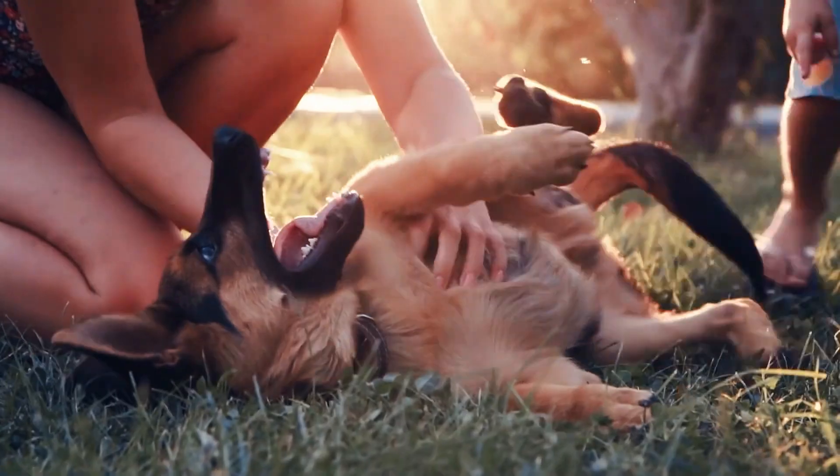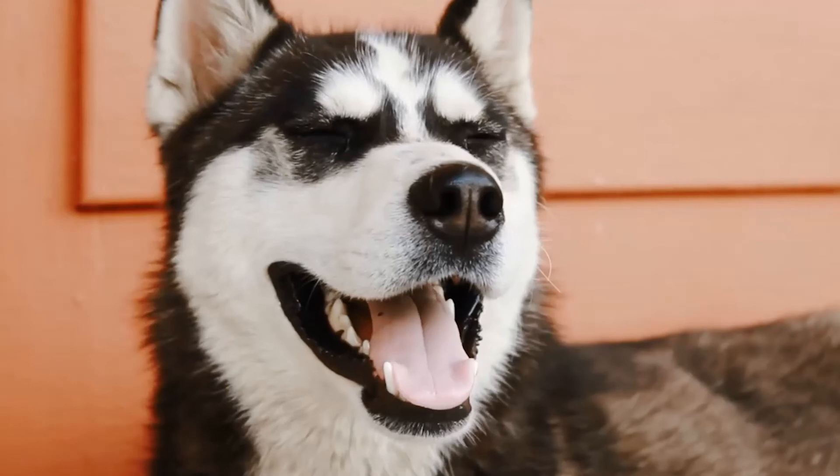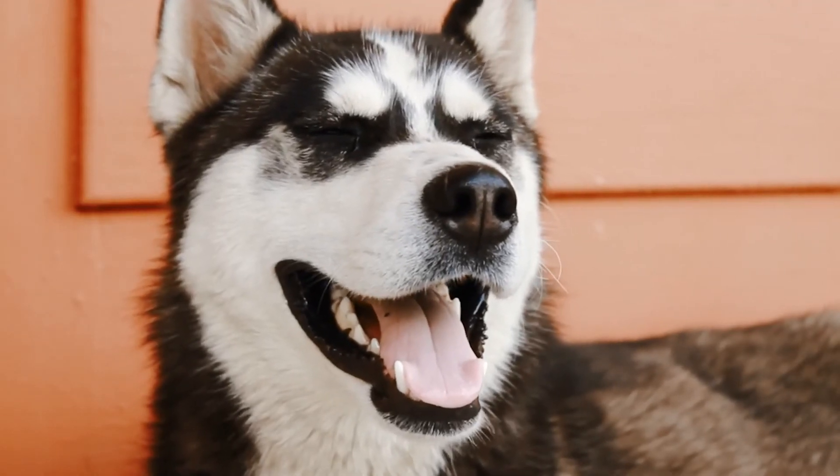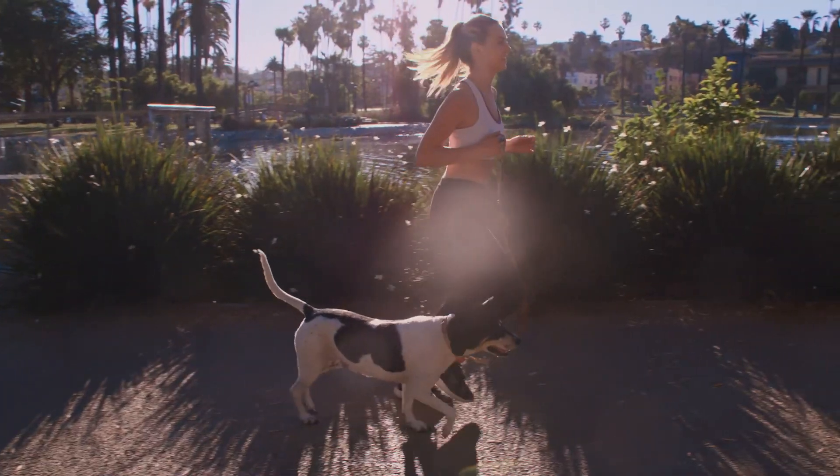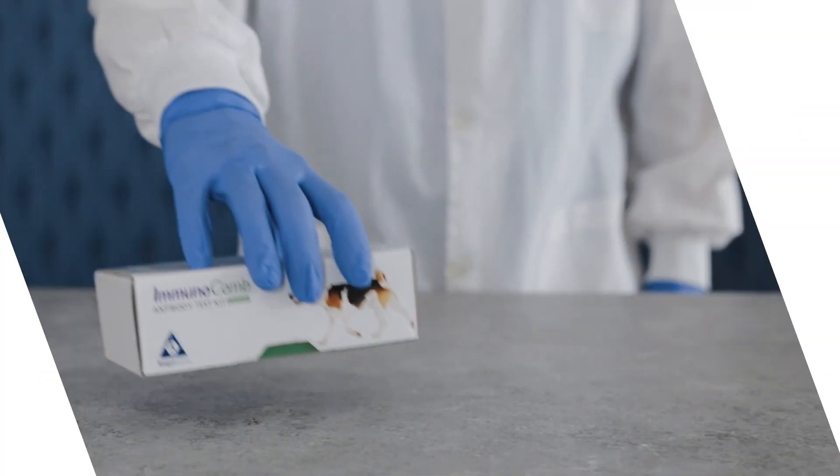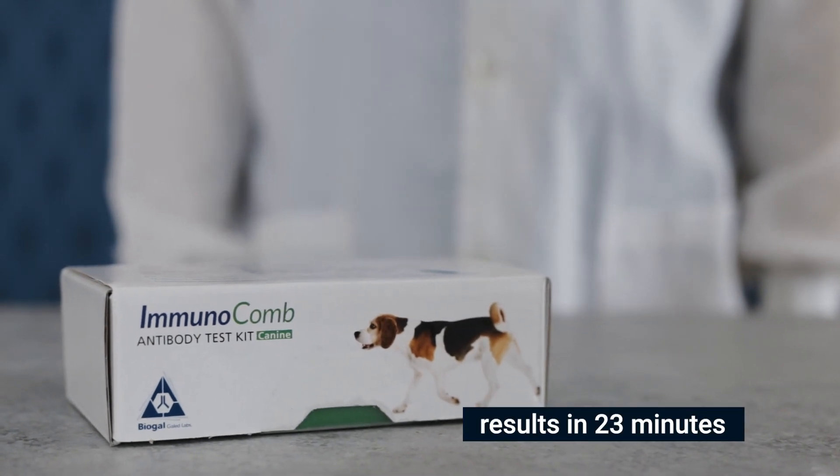Immunocomb Canine Parvo and Distemper IgM Antibody Test Kit is designed to determine dog serum IgM antibody titer to canine parvovirus (CPV) and canine distemper virus (CDV). This DOT ELISA kit is easy to handle and delivers reliable results in just 23 minutes.